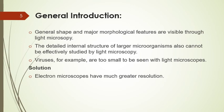An electron microscope is the microscope that uses a beam of accelerated electrons as a source of illumination. The wavelength of an electron can be up to 100,000 times shorter than that of visible light photons. Therefore, electron microscopes have a higher resolving power than any other microscope and can reveal the structure of smaller objects.